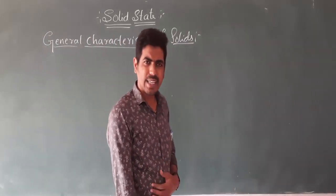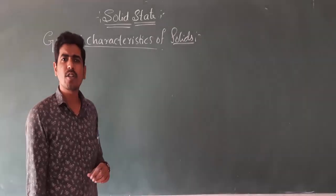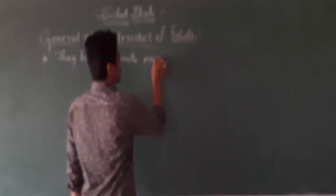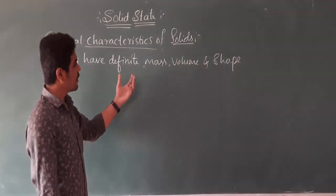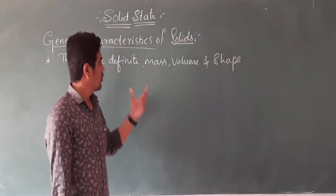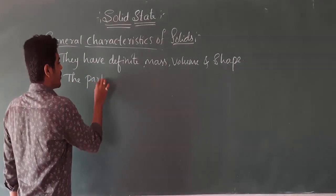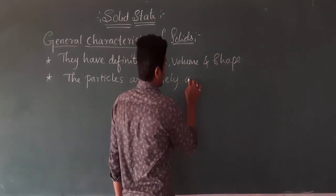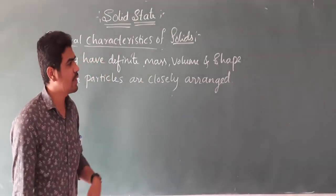As you already learned about the general characteristics of solids in the first year, let me repeat them. The first property of solids is they have definite mass, volume, and shape. Why do they have definite mass, volume, and shape? This is because the particles which constitute solids are closely arranged. Since the particles are closely arranged, they have definite volume and shape.